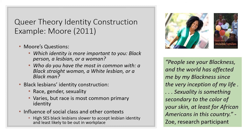Moore asked Black lesbians which identity was most important to them — being Black, a lesbian, or a woman — and who they had the most in common with: a Black straight man, a white lesbian, or a Black man. What she found was that race was the most common primary identity. A research participant exemplified this: 'People see your Blackness and the world has affected me by my Blackness since the very inception of time. Sexuality is something secondary to the color of your skin, at least for African Americans in this country.'